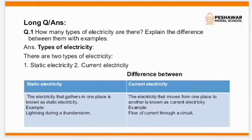Static electricity: The electricity that gathers in one place is known as static electricity. Example: lightning during a thunderstorm. Current electricity: The electricity that moves from one place to another is known as current electricity. Example: flow of current through a circuit.